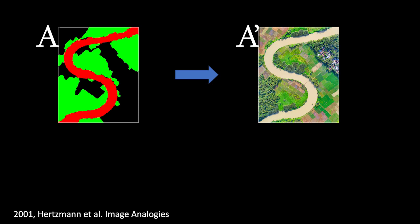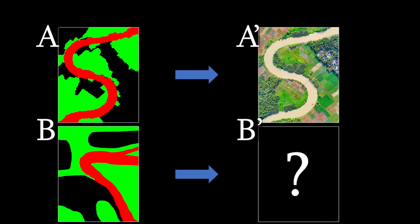In this case, we have an analogy between landscape texture and its segmentation. Later, the transformation function can be applied to a given image B, producing image B prime, which is supposed to relate back to image B in the same way that A prime relates to image A. In this case, the goal is producing a similar landscape texture from a different segmentation.